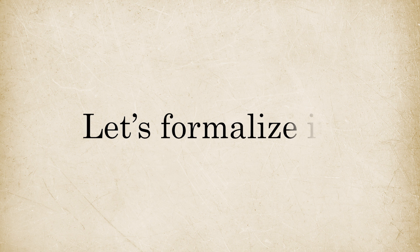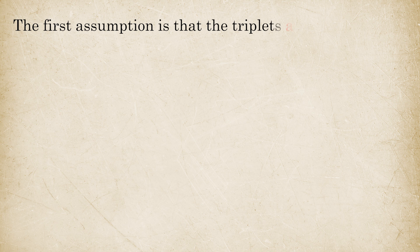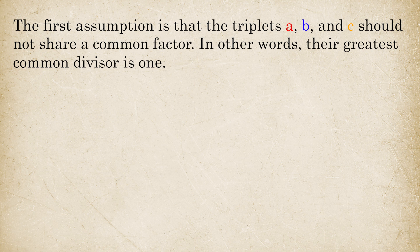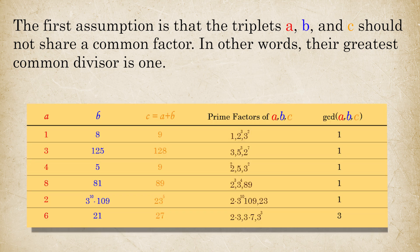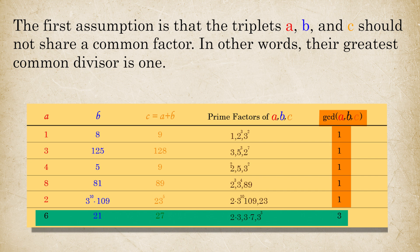Having seen some examples, let us try to formulate it precisely. The first assumption is that the triplets A, B, and C should not share a common factor. In other words, their greatest common divisor is 1. Here are some examples of such triplets. The ABC conjecture holds only when the GCD is 1. Therefore, it doesn't apply to the last triplet, 6, 21, and 27, whose GCD is 3.